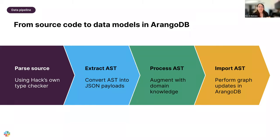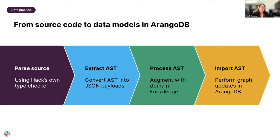We extract the AST information into JSON payloads with a common schema for the next step in the pipeline, which augments the data — determining whether this is an unsafe operation or an async operation, adding domain knowledge from Slack or other integrations. The final step is importing: the importer has a caching layer to perform efficient and effective operations into the graph, ensuring we can import everything into a fast, high-performance system.